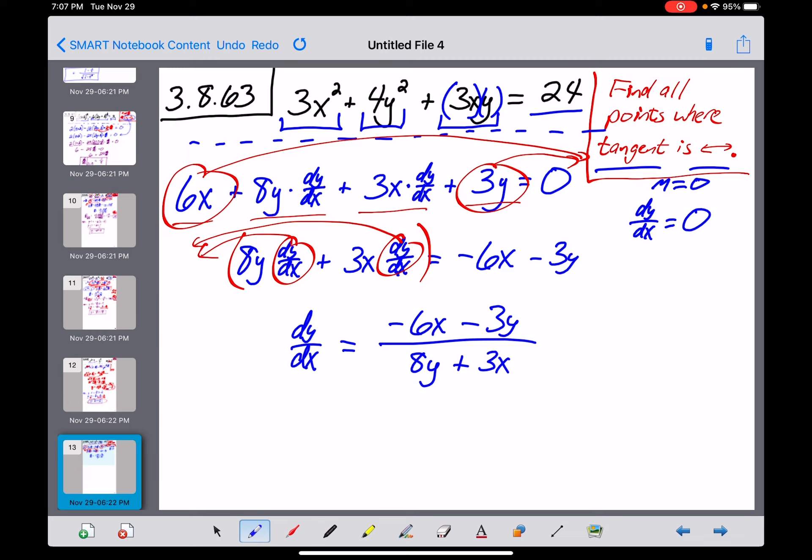Now, they want us to find everywhere on this curve where the tangent line is horizontal, meaning where this derivative has a numerical value of 0. So how are we going to do that? I want to remind you that when you're dealing with a quotient like this derivative is, the only way that a fraction can ever equal 0 is if the numerator is equal to 0. I'm just multiplying both sides by this 8y plus 3x, and then it just wipes out when I multiply that by 0. So I just want to set my numerator, negative 6x minus 3y equal to 0, and solve.